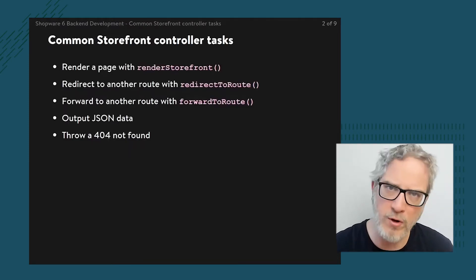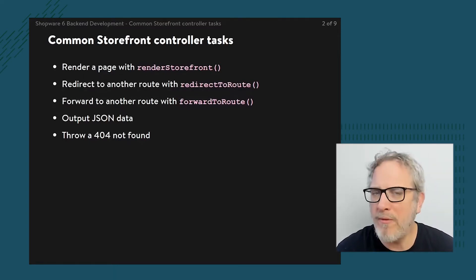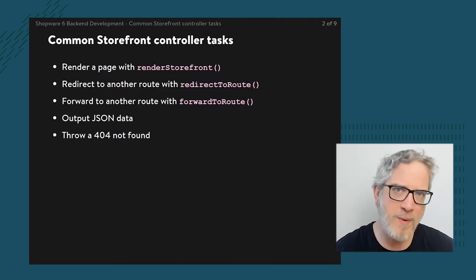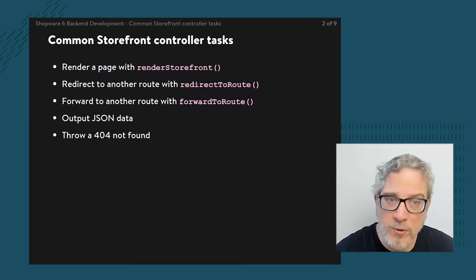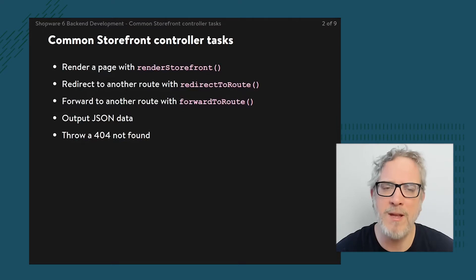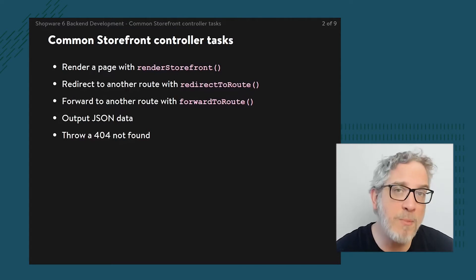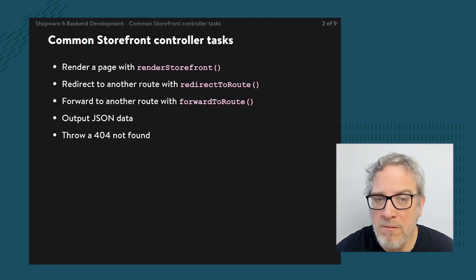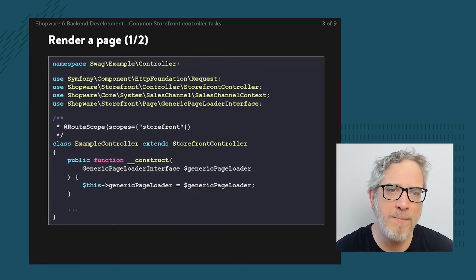Let's start with an overview. We have a couple of things that we could do: rendering a page, redirecting to another page or another route, forwarding to another route — and there's a difference between redirecting and forwarding. We could also just output data, for instance JSON data, and last but not least we could throw an error, for instance a 404 not found error. These five scenarios are what I'm going to zoom into.